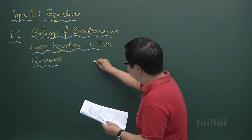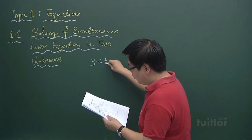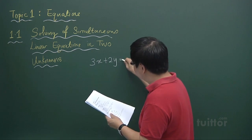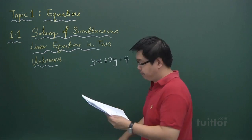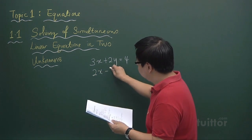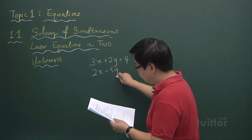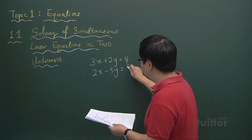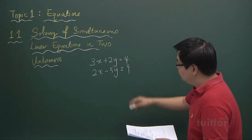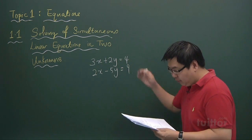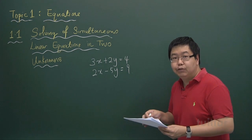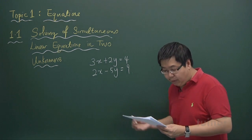We are given this equation: 3x plus 2y equals to 4, and 2x minus 5y equals 9. So there are two unknowns here, x and y, and we are supposed to solve the values for x and y.